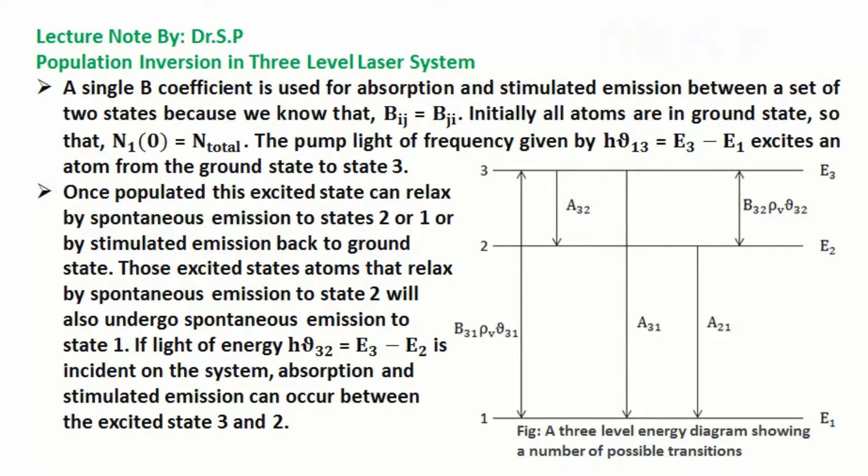Once populated, this excited state can relax by spontaneous emission to states 2 or 1, or by stimulated emission back to ground state. Those excited state atoms that relax by spontaneous emission to state 2 will also undergo spontaneous emission to state 1. If light of energy hν32, that means transition from 3 to 2 equals E3 minus E2, is incident on the system,